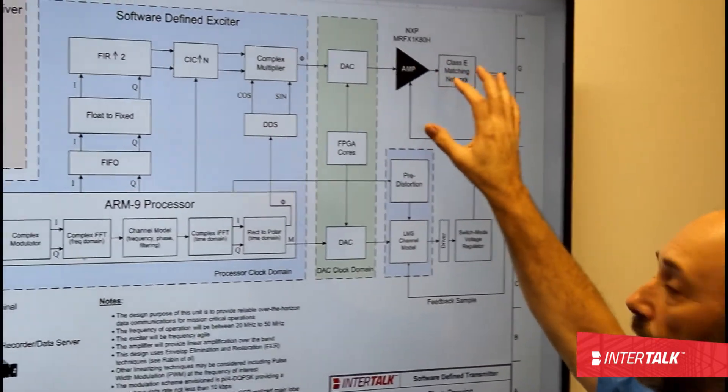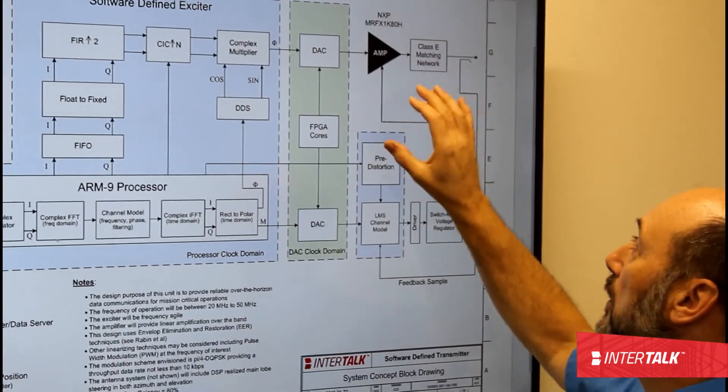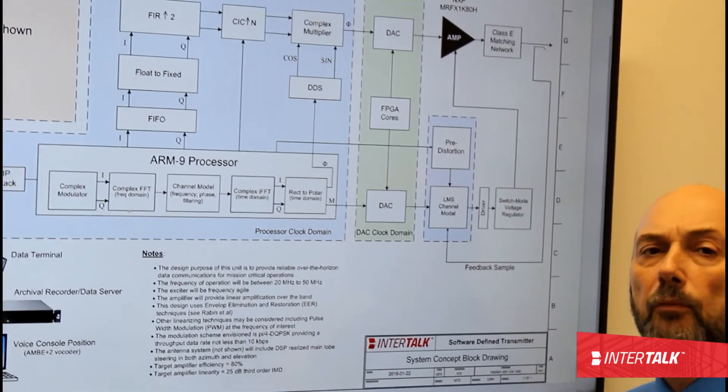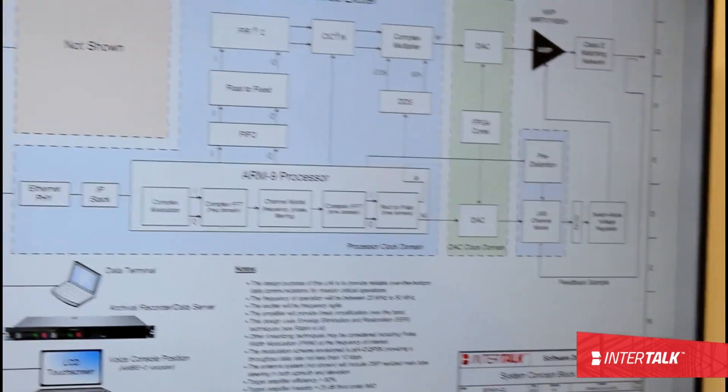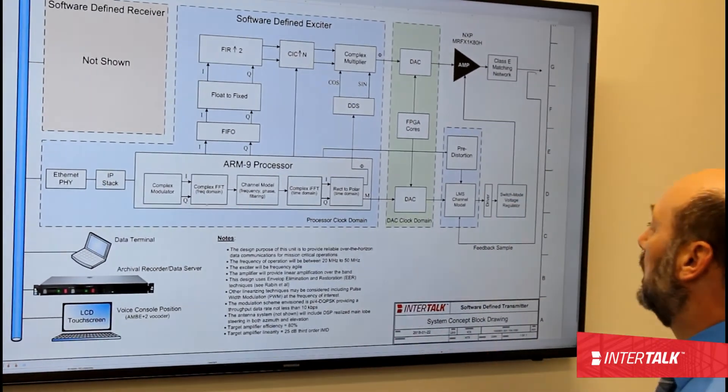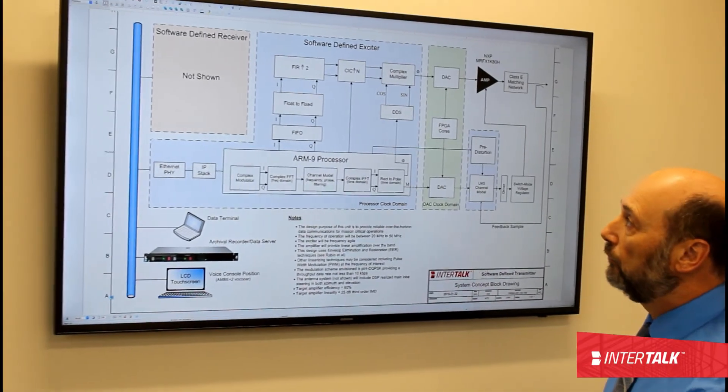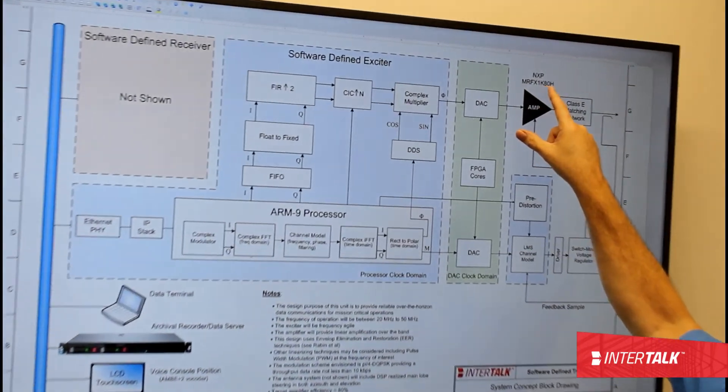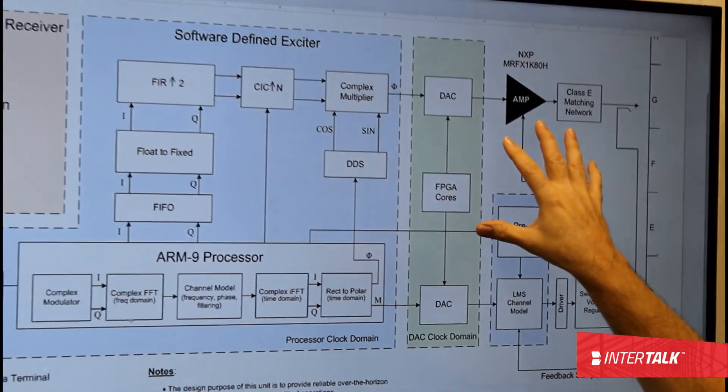This is actually part of the investigation that we are going to be doing, because the Class E matching networks typically are quite narrow bandwidth devices. We need to make it so that it will work over a wider, maybe even an octave bandwidth. So essentially that is what the unit will look like. Here is the MRFX1K80 transistor and the amplifier associated with it.